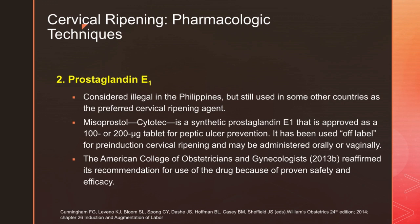Next is prostaglandin E1, or misoprostol. However, this is a drug considered illegal here in the country, though it is still used in some other countries as the preferred cervical ripening agent. Misoprostol is a synthetic prostaglandin E1 approved as a 100 or 200 microgram tablet for peptic ulcer prevention. It has been used off-label for pre-induction cervical ripening and may be administered orally or vaginally. The ACOG has reaffirmed its recommendation for use of the drug because of proven safety and efficacy, but here in the Philippines we do not use misoprostol as it is considered an illegal drug.